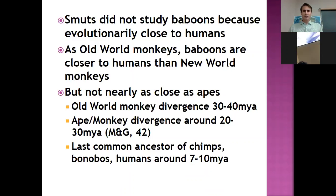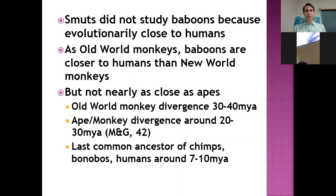We'll talk about this more when we discuss the specifics of human evolution, but in terms of the ape-human divergence, the most recent common ancestor between the species that would lead to chimpanzees, the species that would lead to bonobos, and humans occurs at around 7 to 10 million years ago.